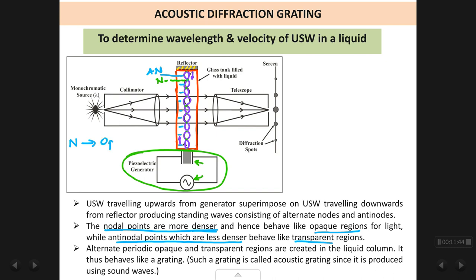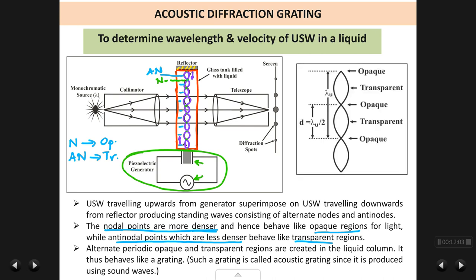All the nodal points behave like opaque regions, whereas the antinodal points behave like transparent regions. Since there are alternate nodes and antinodes in the medium, there are alternate opaque and transparent regions created inside the liquid. A node acts like an opaque region and an antinode acts like a transparent region — opaque, transparent, opaque, transparent — formed within the liquid column. Hence, the liquid column in the tank behaves like a grating.